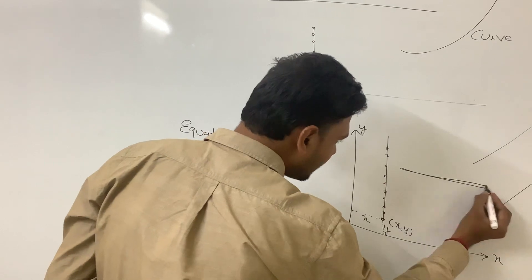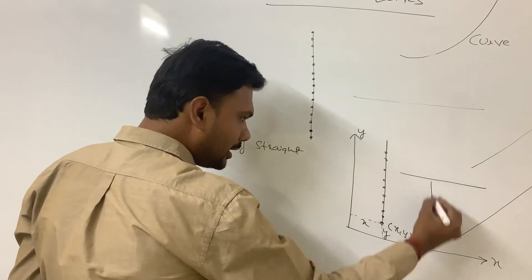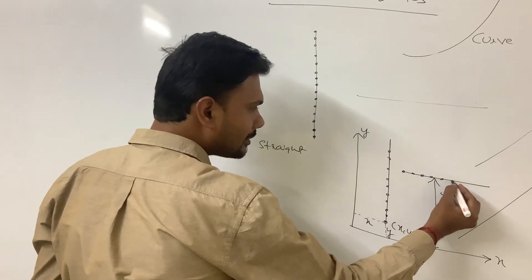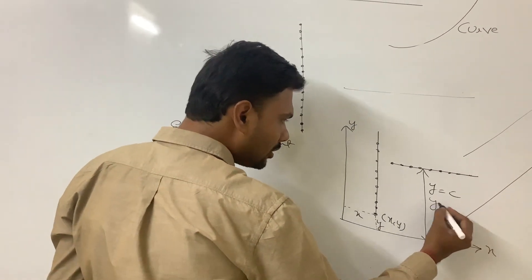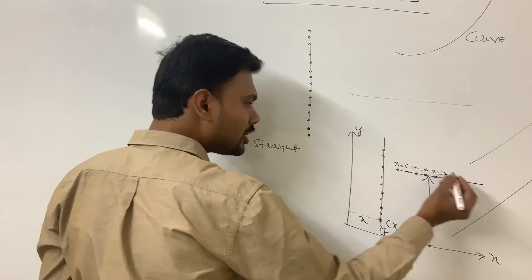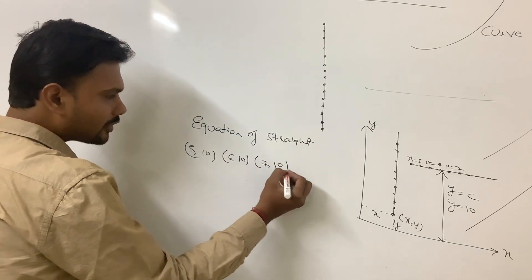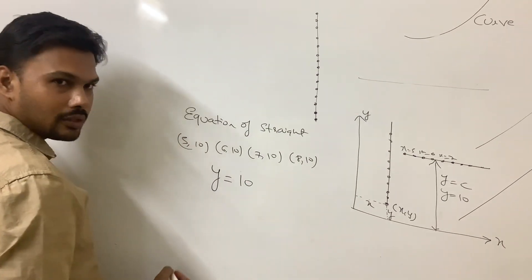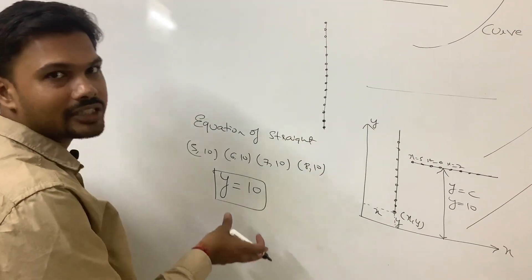Consider this horizontal line. It is at a certain distance from the x-axis, so its y-coordinate is constant. Suppose this distance is 10 — then the y-coordinate is fixed at 10. The x value may change: 5, 6, 7, 8, and so on. So the points are represented as (5,10), (6,10), (7,10), (8,10). All points on this horizontal straight line satisfy the relation y = 10, so the equation of this line is y = 10.